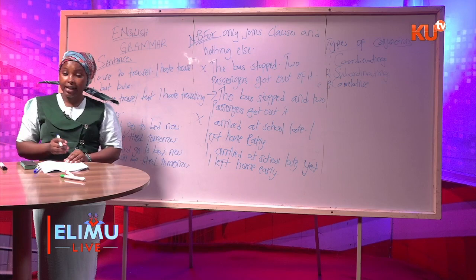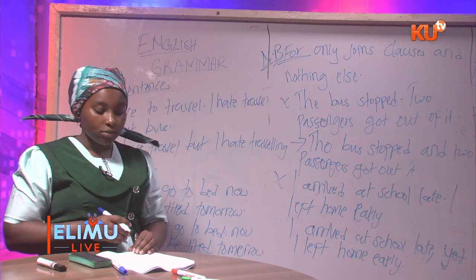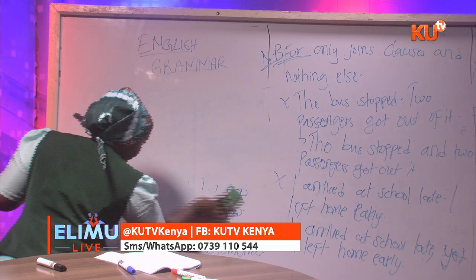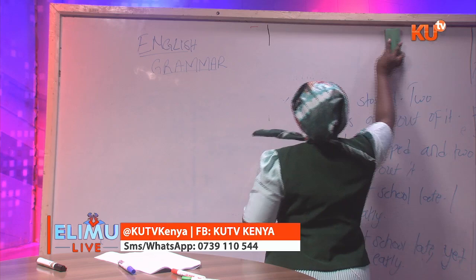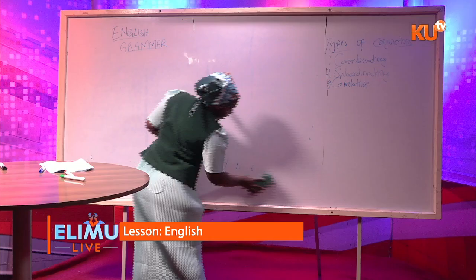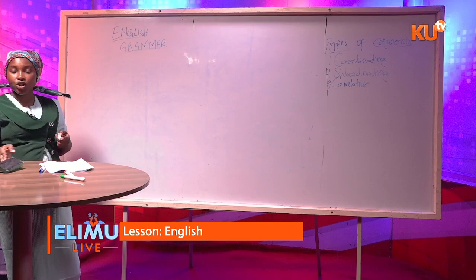By knowing each coordinating conjunction and the idea it brings out, your work in an exam will be very easy. Now let's look at the second type of conjunctions, which is subordinating conjunctions. Coordinating conjunctions are covered in form one, and subordinating conjunctions are covered in form two — they are a bit more complex.